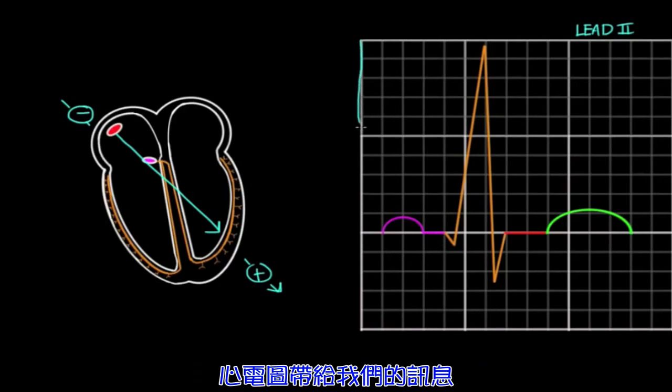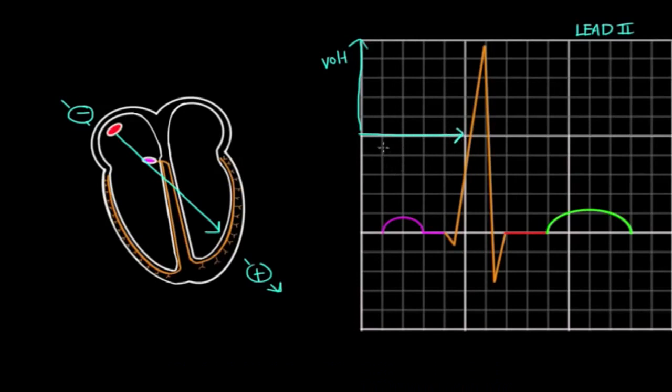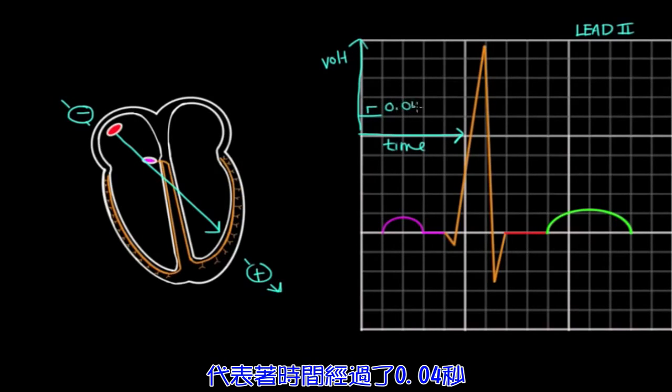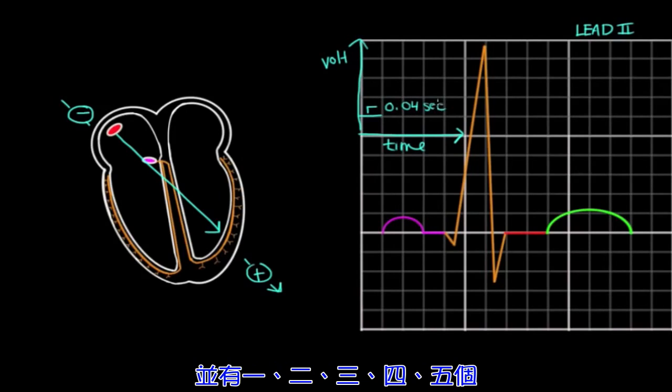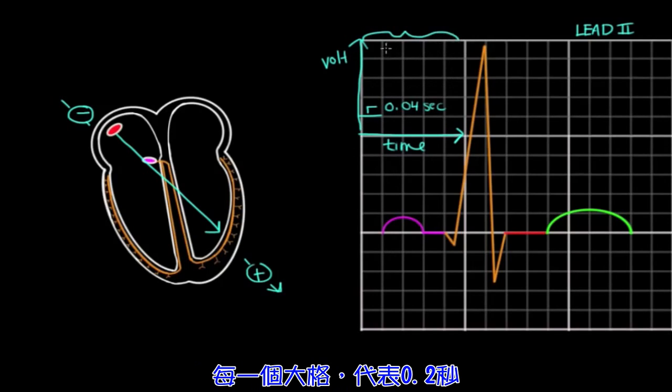An EKG gives us information on voltage over time, or the change in voltage over time. So voltage is on the y-axis, time is on the x-axis. Every small box running in the x-axis or time direction represents 0.04 seconds. And there are 1, 2, 3, 4, 5 small boxes per every big box. So you can calculate that each big box represents 0.2 seconds.